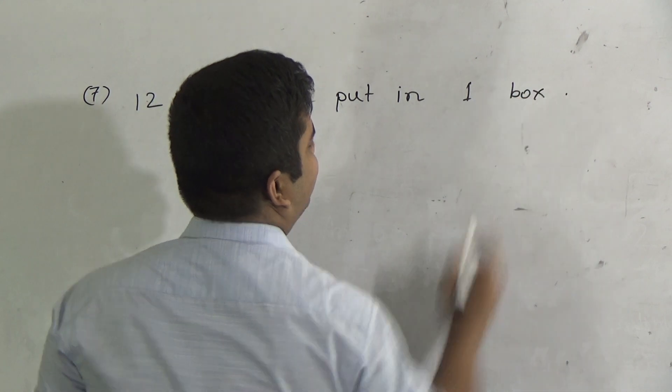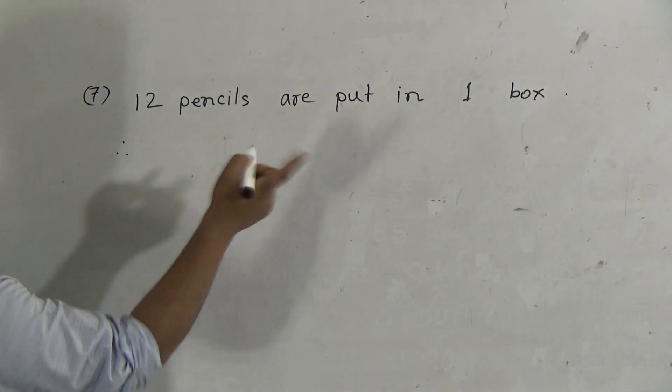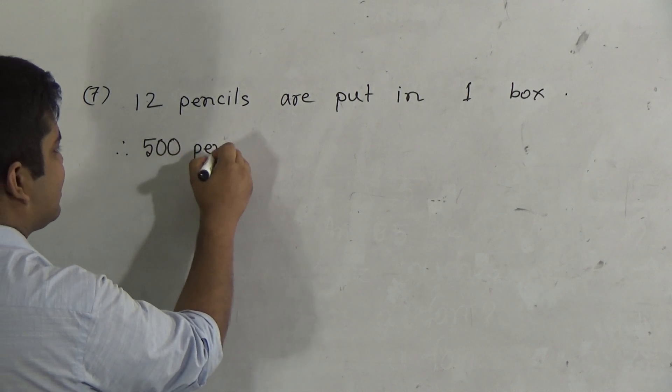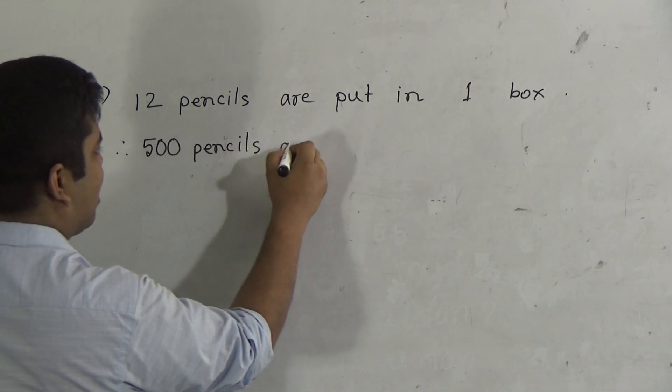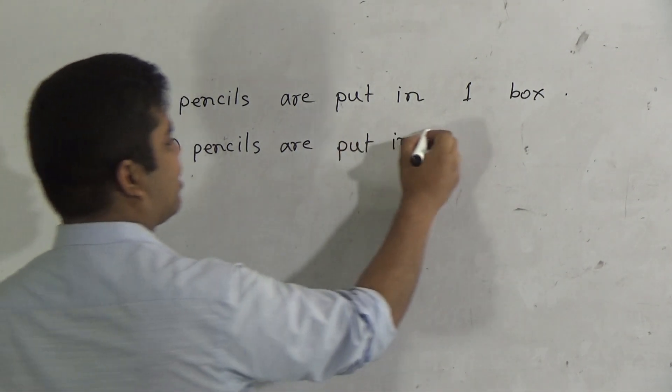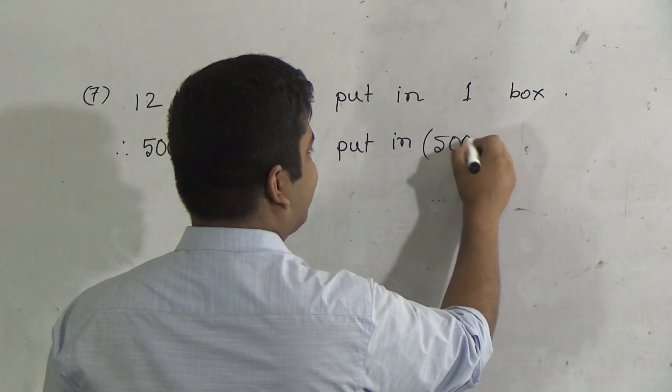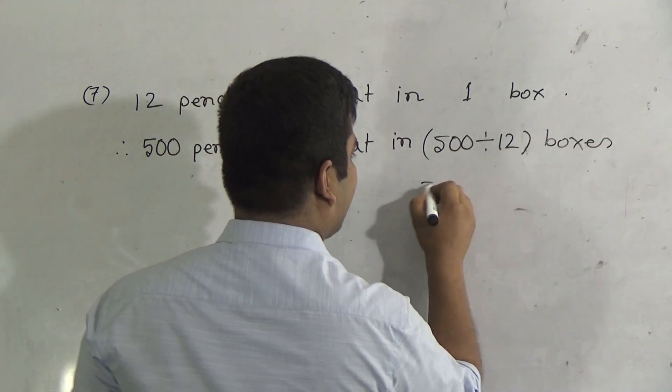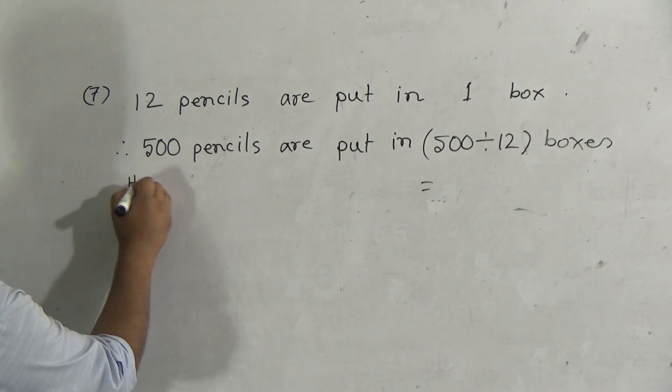Therefore, 500 pencils are put in. We do division. We do division. 500 divided by 12 boxes. Now here we show the division procedure. Here 12 and 500.